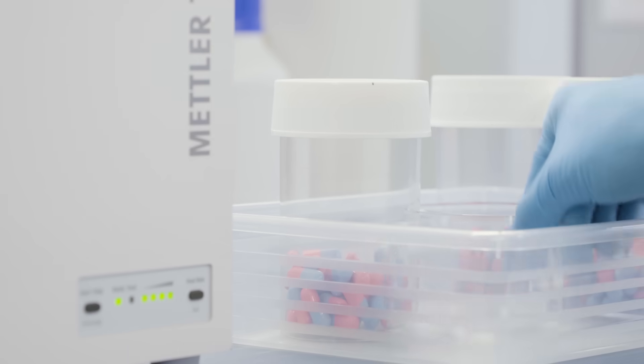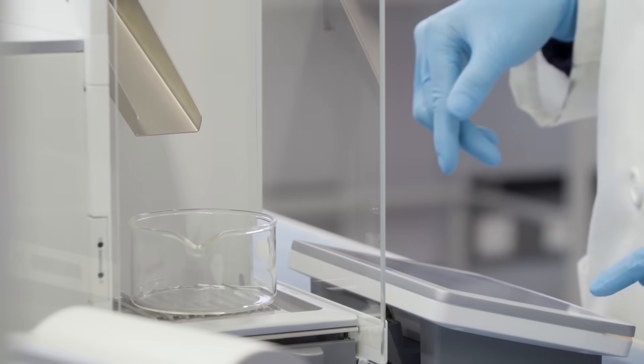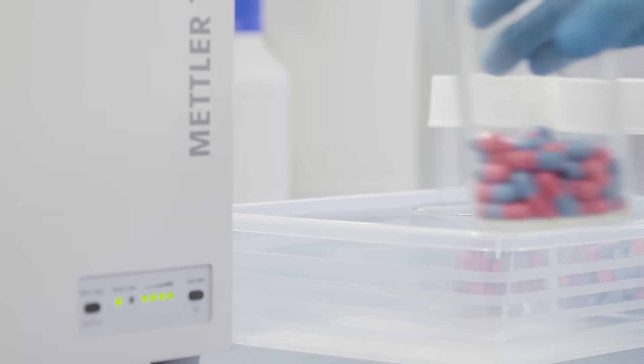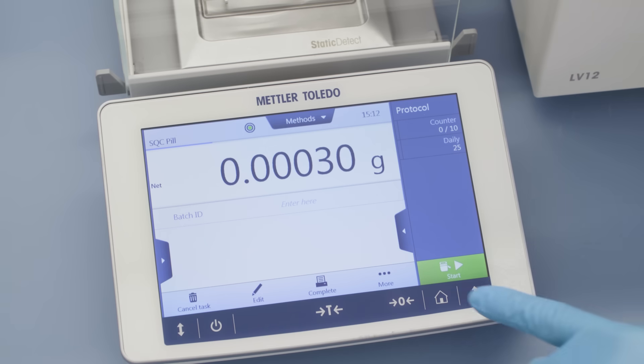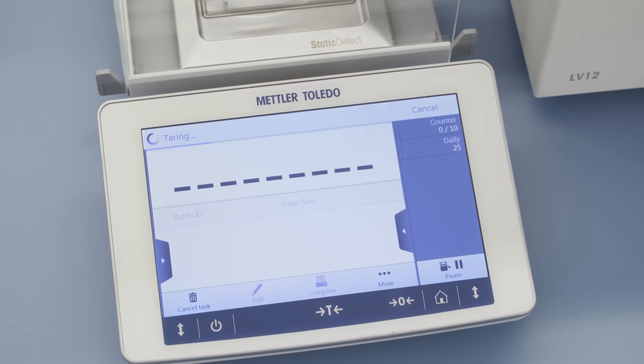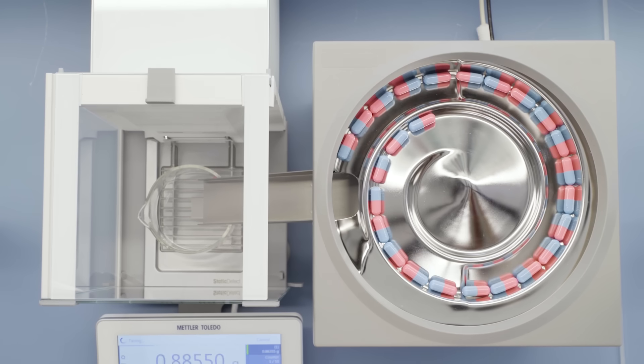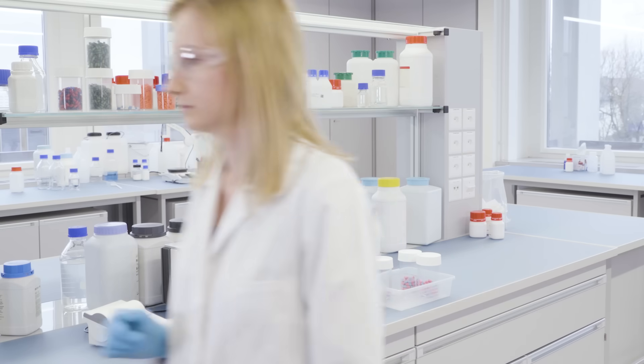To evaluate the uniformity of dosage units of a batch, a subset of specimens is weighed to determine the weight variation. The specimens are loaded into the feeder and the SQC application is launched on the balance terminal. The uniformity of dosage units test will run automatically.